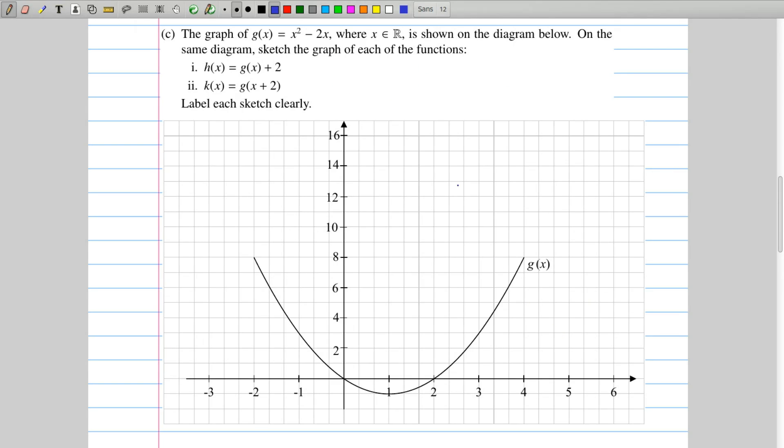This is all about transforming functions. So we know that h of x is the same as g of x, but then you add 2 to it. And since these describe essentially the height of the graph, all we need to do is say, well, if x is minus 2, g of x is 8. So that's this point right here. The function for h of x says that it's 2 more than that. So h must exist at 10, 8 plus 2.